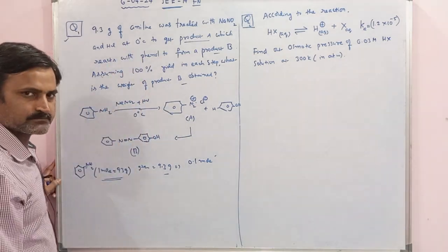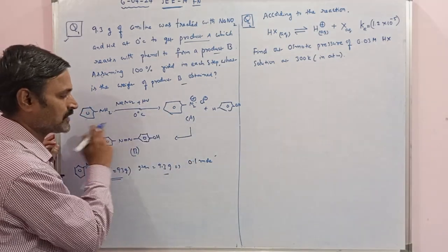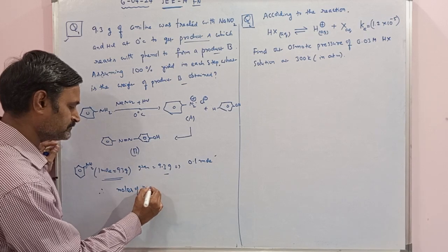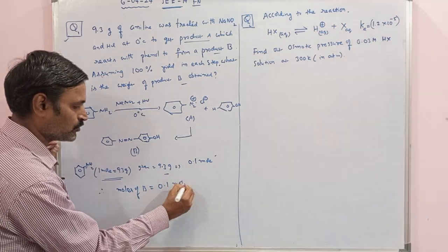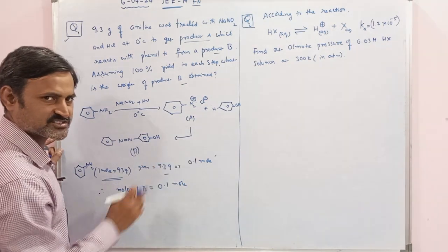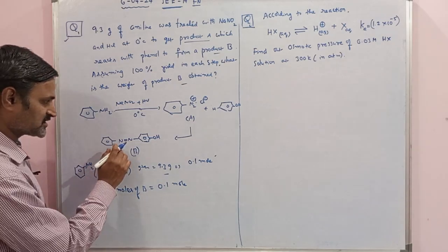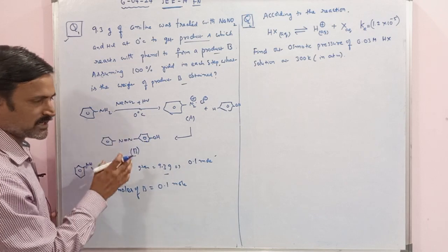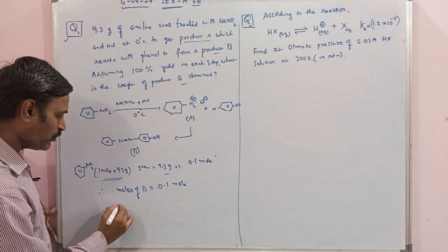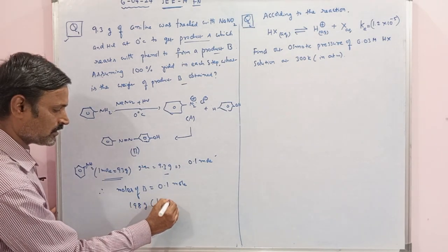When 0.1 mole of aniline is given, the product is also the same number of moles. That means the number of moles of B obtained is 0.1 mole. Now, to calculate the weight of product B, we need moles of B times its molar mass. Product B, this dye, has total hydrogen, carbon, nitrogen, and oxygen. If you consider all these atomic weights to find the molar mass, one mole of B is actually 198 grams.